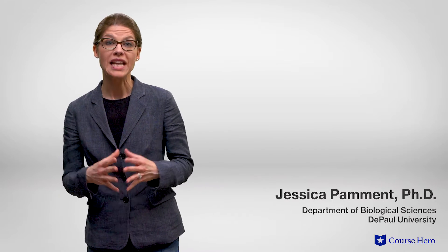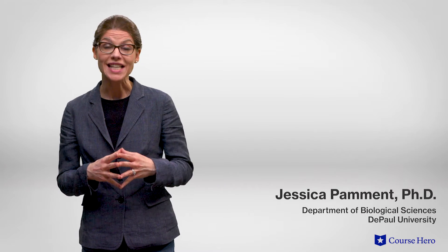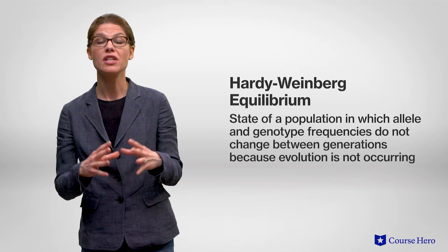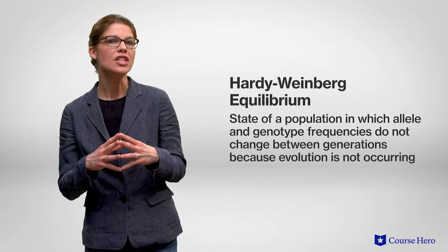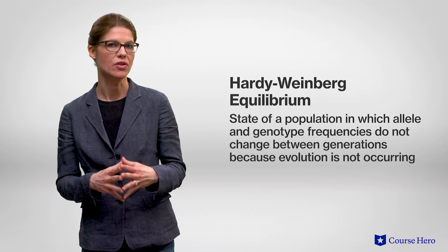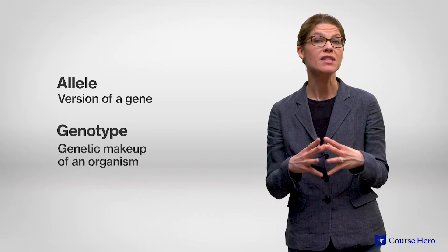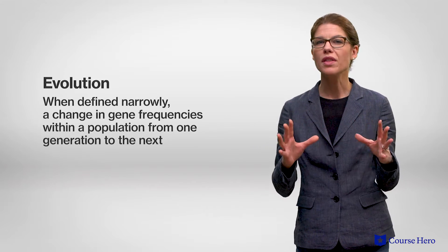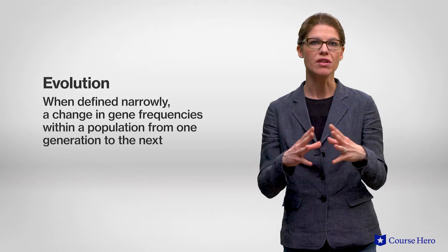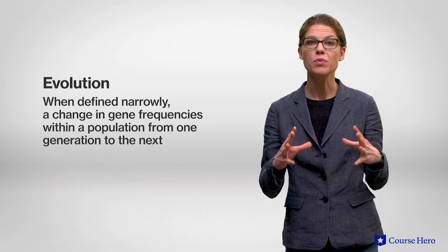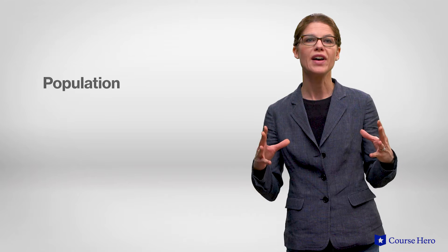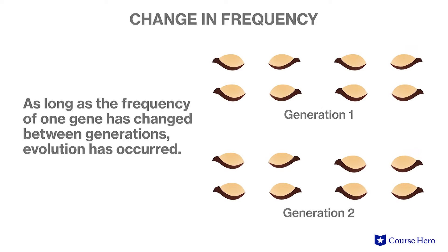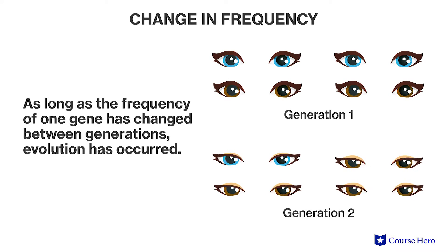The Hardy-Weinberg Principle, named after the scholars who introduced the idea, states that if a population is not evolving, the allele and genotype frequencies will not change between generations. An allele is a version of a gene, and a genotype is the genetic makeup of an individual. The mechanisms of evolution all have one thing in common: they all change the frequency of at least one gene within a population, which is defined as an interbreeding group. So, as long as the frequency of one gene has changed between generations, evolution has occurred.